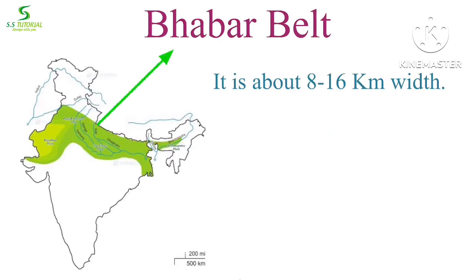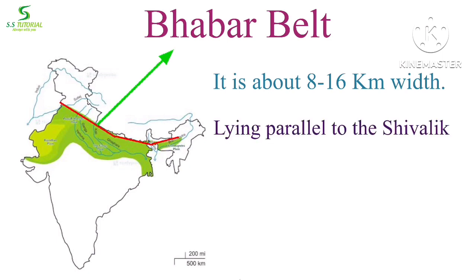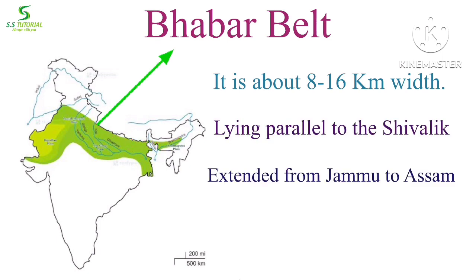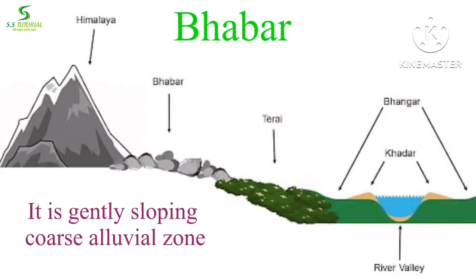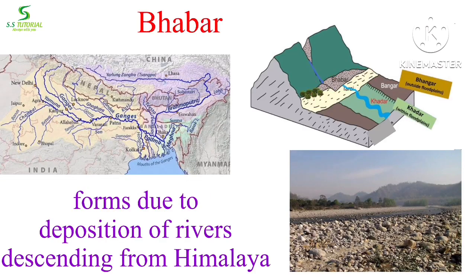Bhabar is a narrow belt which is about 8 to 16 kilometers wide, lying parallel to the slopes of the Siwalik from Jammu to Assam, at the confluence of the Himalayas and the Indo-Gangetic Plain. It is generally a sloping coarse alluvial zone. This belt is formed as a result of the deposition of pebbles by rivers descending from the Himalayas.